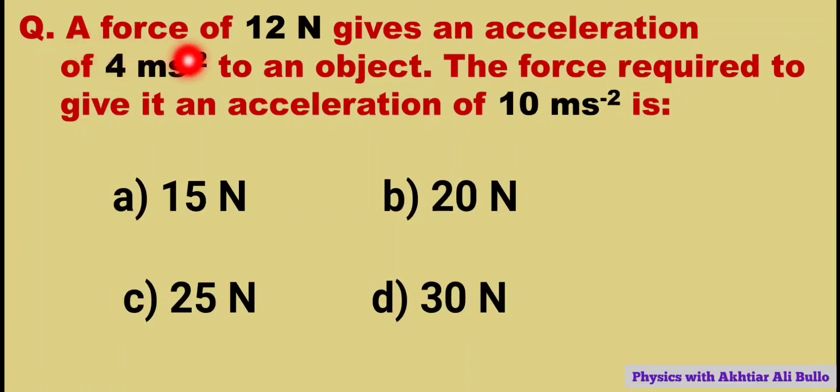A force of 12 newtons gives an acceleration of 4 meters per second squared to an object. The force required to give it an acceleration of 10 meters per second squared is: a) 15 newtons, b) 20 newtons, c) 25 newtons, d) 30 newtons.